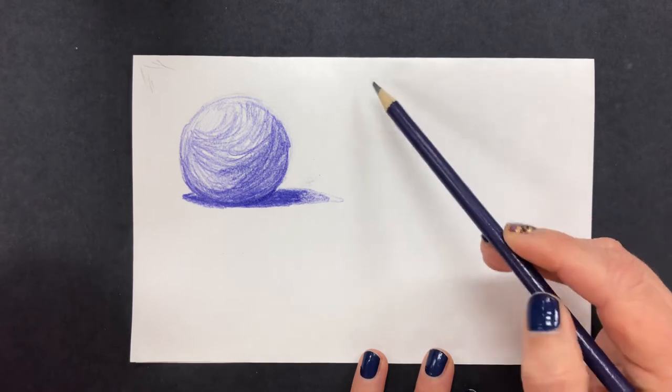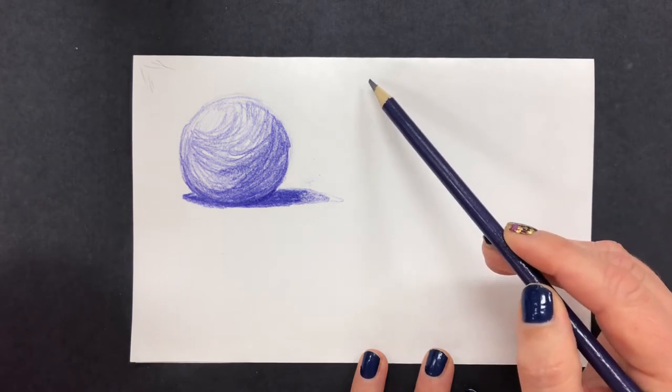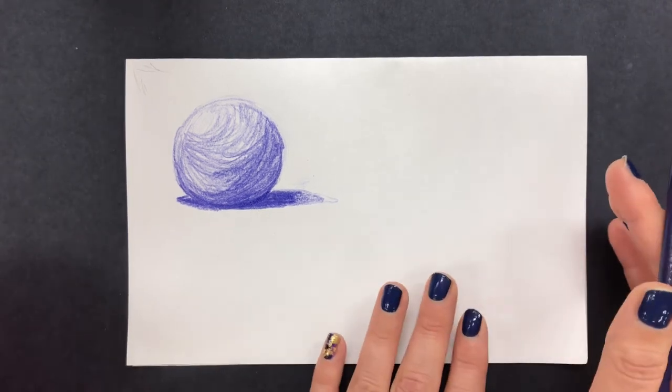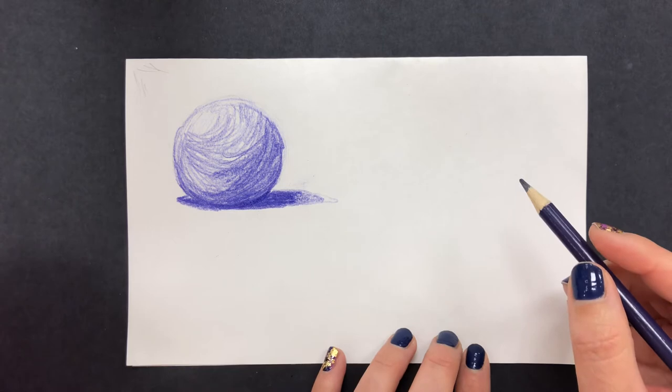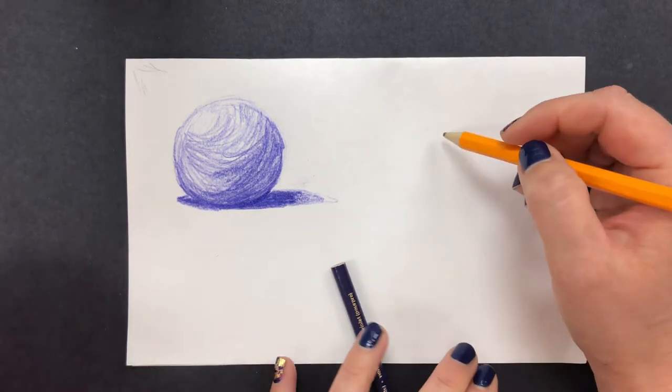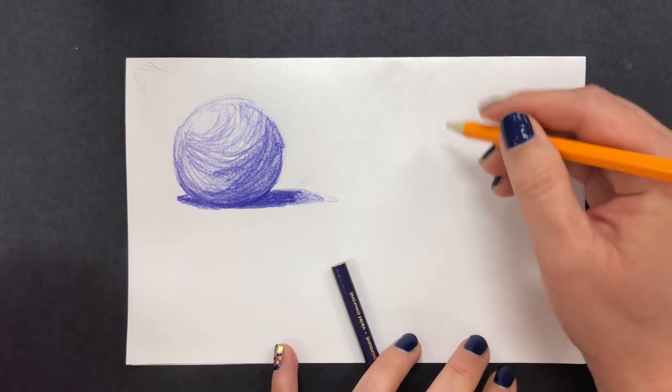We're going to consider the top left-hand corner as our source of light and I want you to follow along with me. I'm going to start with a pencil just very lightly drawing a circle.